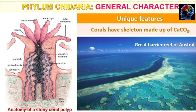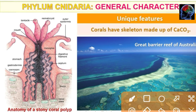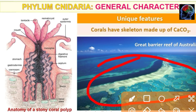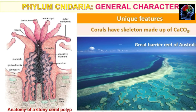This is the Great Barrier Reef of Australia. The Great Barrier Reef has a large number of polyps and medusae. This is located in Australia.